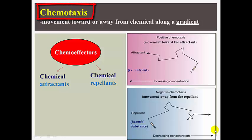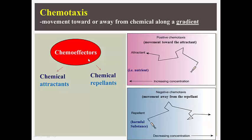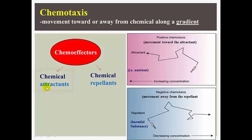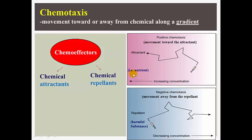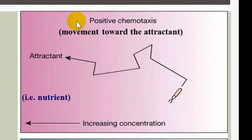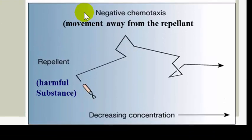So why do bacteria move in the direction that they move? Some bacterial movements are influenced by the chemical environment, a process called chemotaxis. Some bacteria move in response to light, a process called phototaxis. And some bacteria move in response to certain terminal electron acceptors such as oxygen. Chemotaxis is a mechanism that microorganisms use in response to chemicals, referring to the ability to move along a concentration gradient towards or away from a chemical, also called chemoeffectors. Chemoeffectors can be attractants or repellants — a nutrient is an attractant and a harmful substance is a repellant. Thus, positive chemotaxis is movement towards an attractant, while negative chemotaxis is movement away from a repellant.